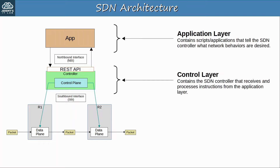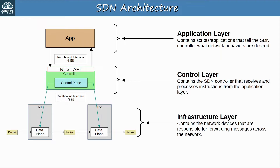Next is the control layer. This contains the SDN controller that receives and processes instructions from the application layer. Although this is a separate concept from the control plane, this layer is also what contains the centralized control plane of the network. And finally there is the infrastructure layer, which contains the actual devices that are responsible for forwarding messages across the network. The application layer contains apps and scripts for instructing the SDN controller, the control layer contains the SDN controller, and the infrastructure layer contains the network devices.